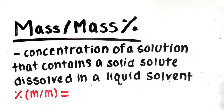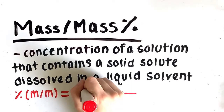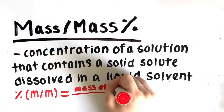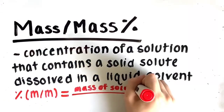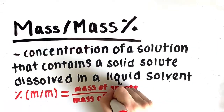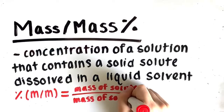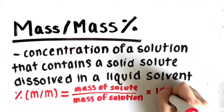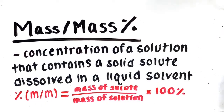Next we have mass over mass percent. This is the concentration of a solution that contains a solid solute dissolved in a liquid solvent. It is expressed in units of mass over mass. The equation is: percent m/m = (mass of solute / mass of solution) × 100%.